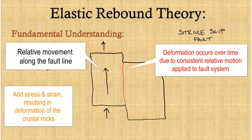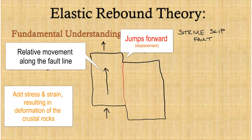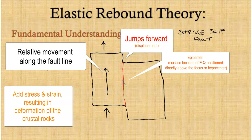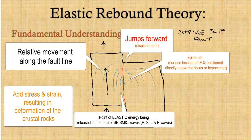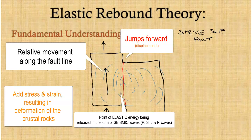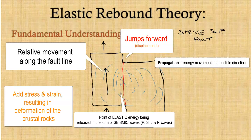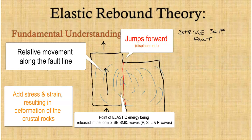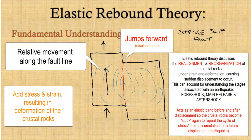Eventually, the moving side is going to jump forward in the direction of movement, displacing a certain area of ground and releasing earthquake waves — the seismic waves and the energy built up. The epicenter, which is the point above the focus on the surface, releases all the seismic and elastic energy in the form of seismic waves — the P, S, L, and R waves — propagating out in all directions, caused by the elastic rebound of the ground as it realigns and reorganizes itself.